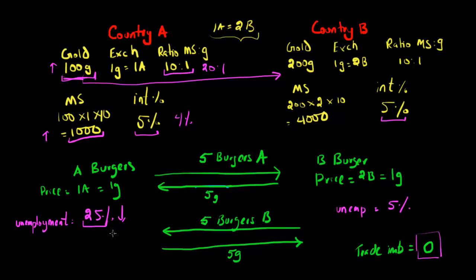This all comes down to the following: when Country A and Country B are on the gold standard and Country A has a higher unemployment rate, the only thing they can do to get more gold into the country, increase the money supply, and decrease unemployment is to somehow get better at making burgers. That is the key point. So how does Country A get better at making burgers?